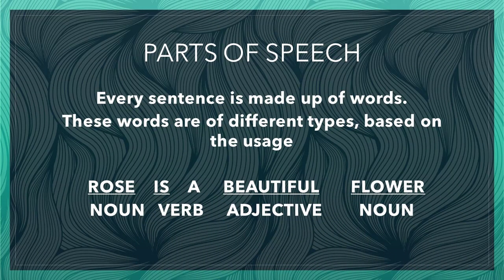What is parts of speech? In English, every sentence is made up of words, and these words are of different types based on their usage. Let us understand with an example. Here you can see: 'Rose is a beautiful flower.' In this, rose comes under noun, is is a verb, and a is an article which is a special type of adjective. Beautiful is an adjective and flower is a noun. So how are these words identified and classified into noun, verb, or adjective? Let us go through the next slide.